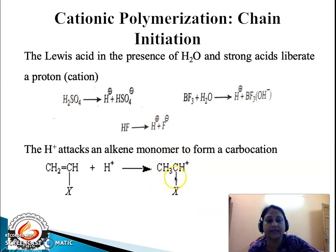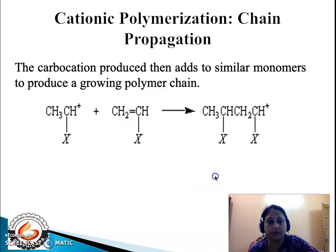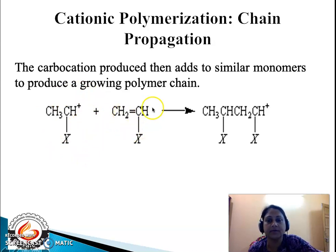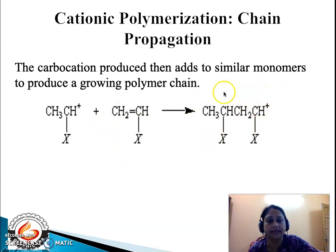It is this carbocation that attacks further monomeric molecules to give rise to a chain-type reaction, finally giving rise to a polymer. In chain propagation, the carbocation formed in the previous step attacks a monomer that again contains a double bond, where X represents an electron-releasing substituent. The resulting product is again another carbocation, as evident by the positive charge on the terminal carbon atom.